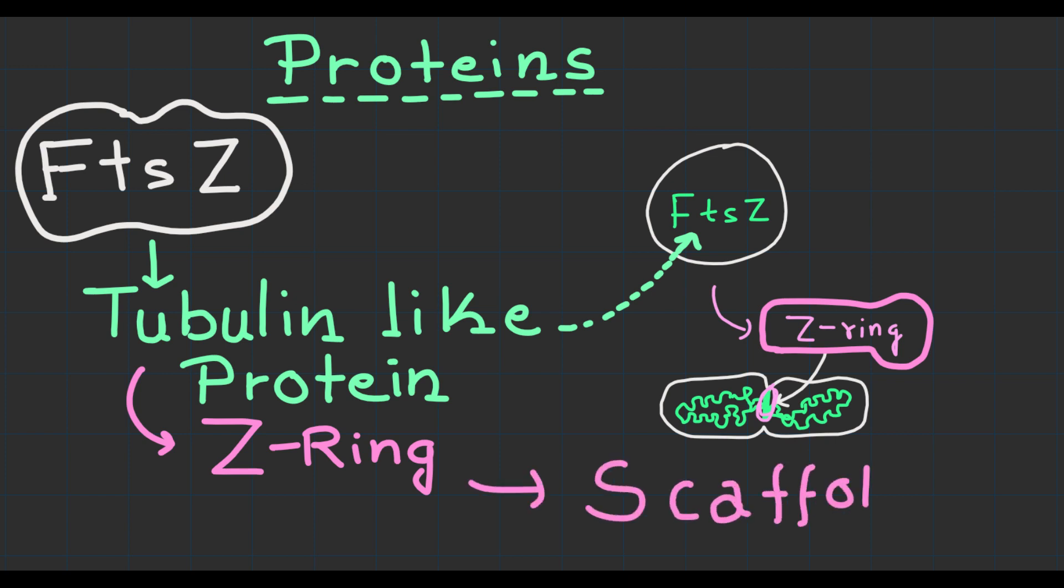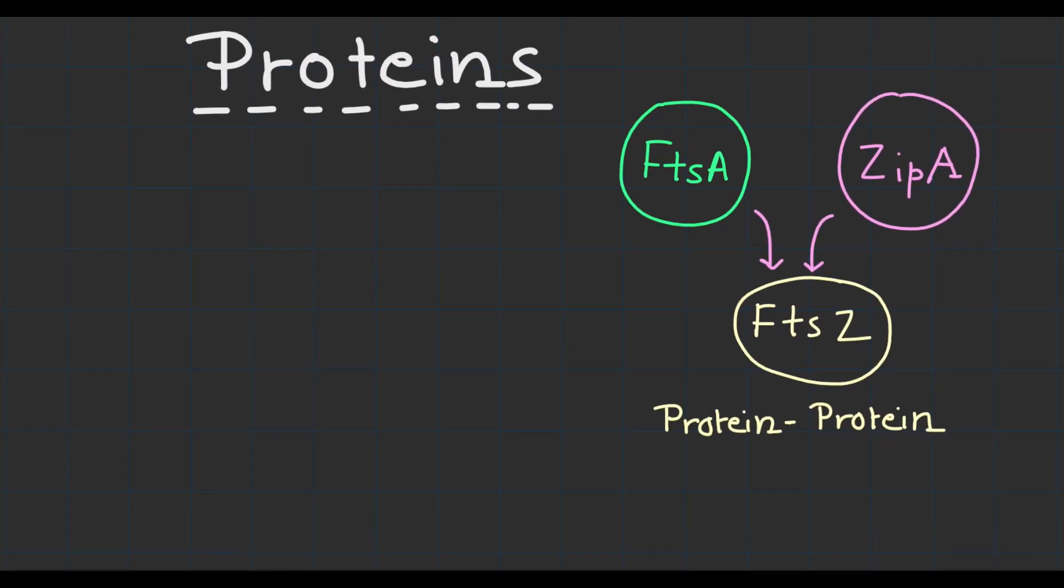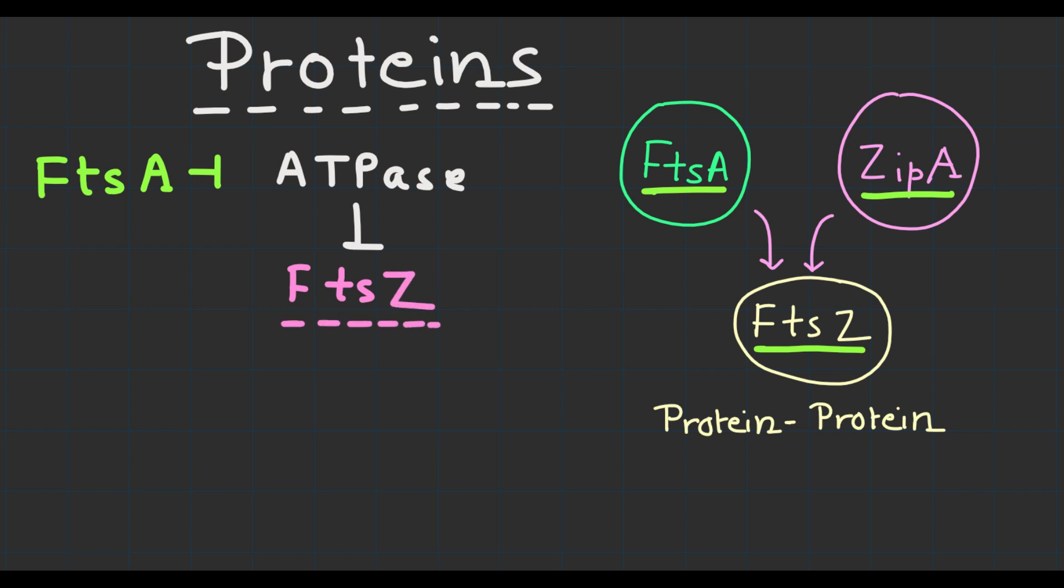Two proteins, FtsA and ZipA, work in conjunction with FtsZ. FtsA is an ATPase protein that interacts with FtsZ, anchoring it to the cell membrane. It helps to stabilize the Z ring and facilitate its construction during cell division.